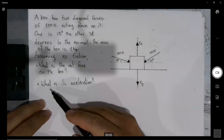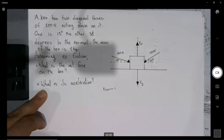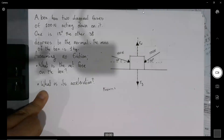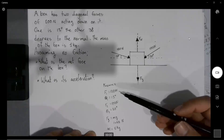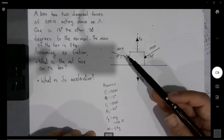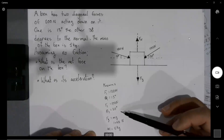Let's start off with our knowns. It says a box has two diagonal forces of 100 newtons acting down on it — one is 15 degrees, the other is 30 degrees to the normal. The mass of the box is one kilogram, assuming no friction. We need to find the net force acting on the box and its acceleration. Force one is 100 newtons at 15 degrees, force two is 100 newtons at 30 degrees.